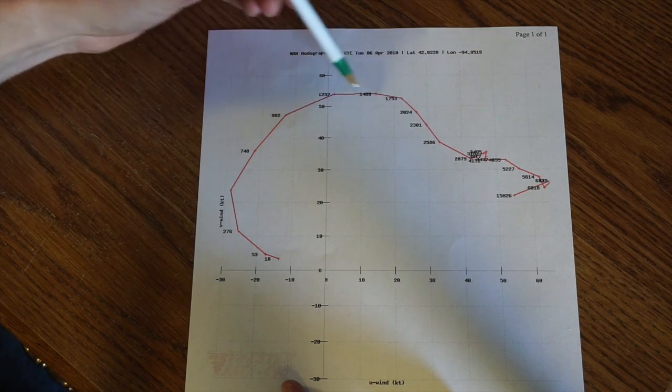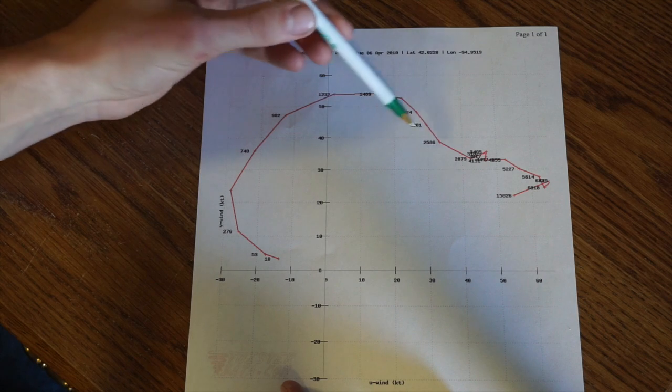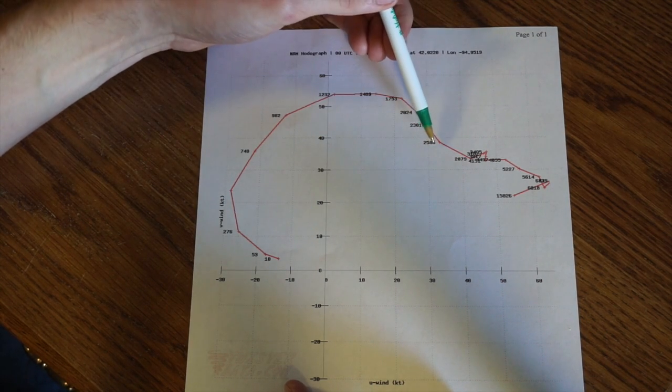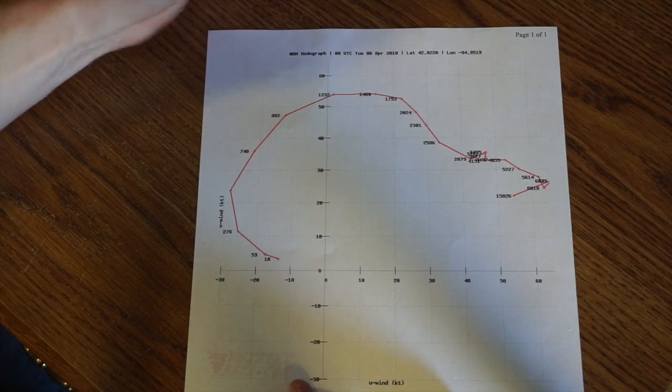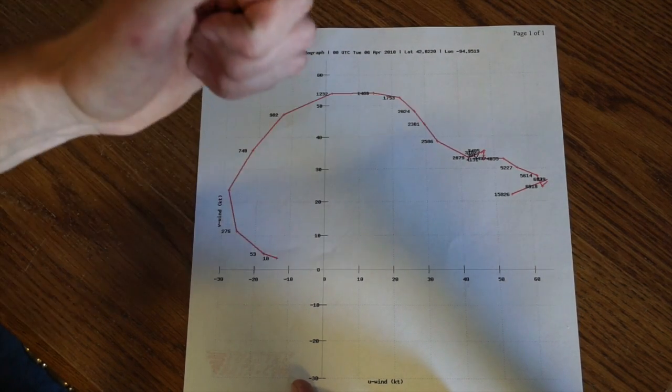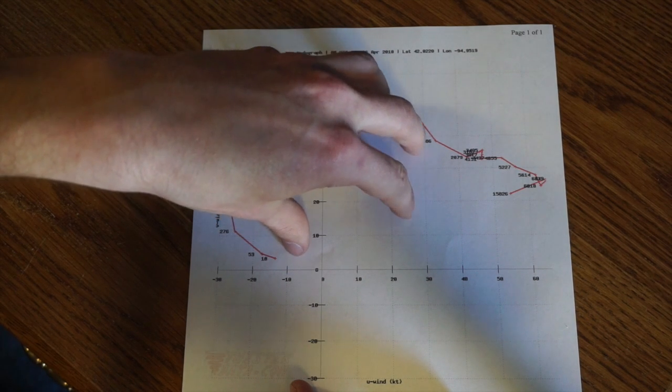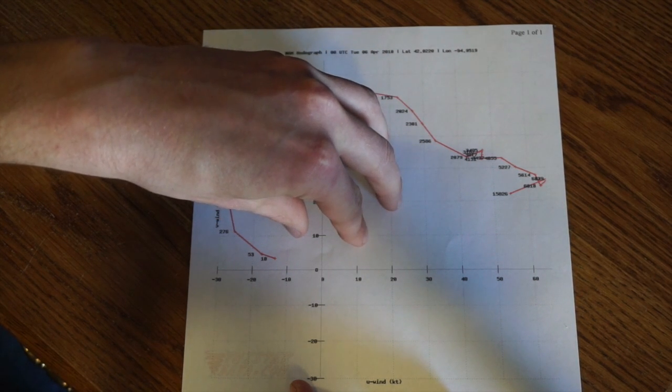So a really strong wind speed and change in direction. Throughout your low levels, you're going westward to north to northeast in just a few miles up. And that's what you want to look for, because in an updraft of a thunderstorm, you then have rotation.